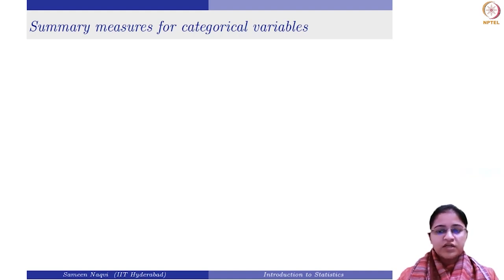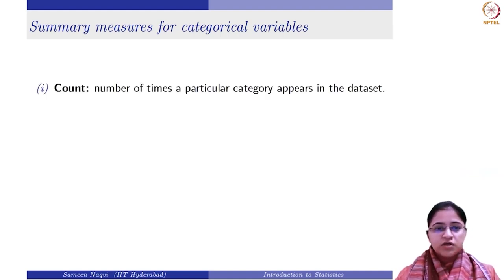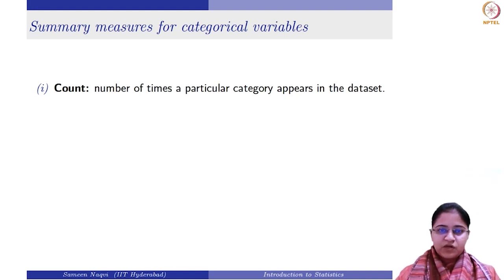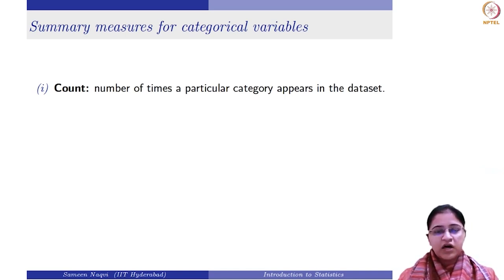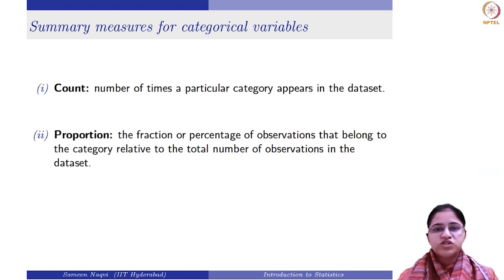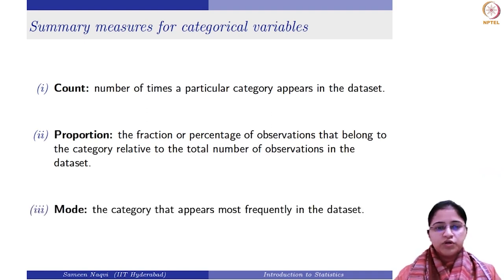In order to summarize categorical data, you can either begin with the count. The first measure of a categorical variable is count — basically the number of times a particular category appears in the data set. For instance, if you have the eye colours, it will count how many times you have brown eye colour, how many are black, and likewise. Next, you can have proportion, which basically gives you the percentage of observations that belong to a category with respect to the total number of observations. And last is mode — the category that appears most frequently in the data set.